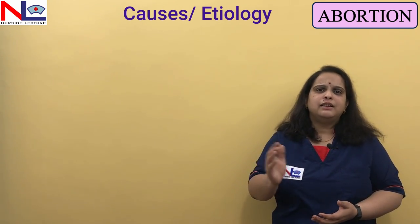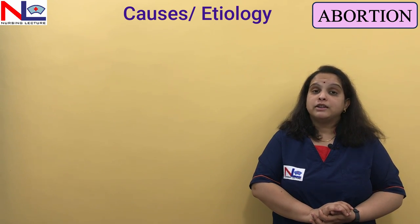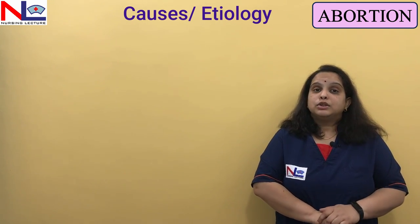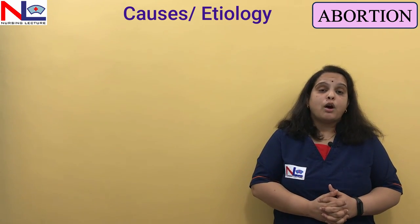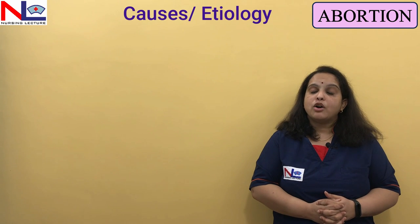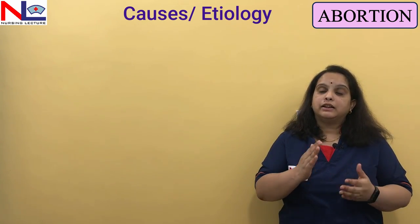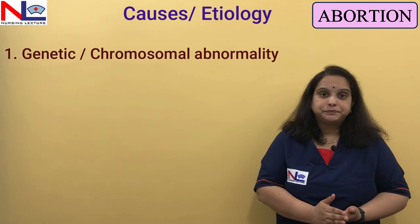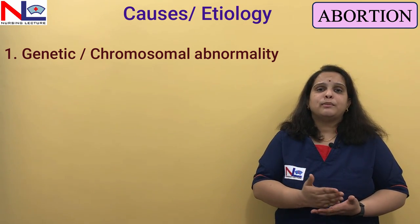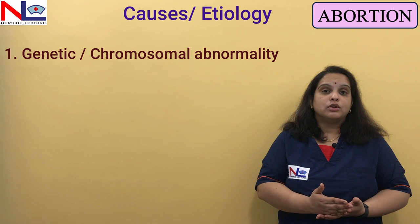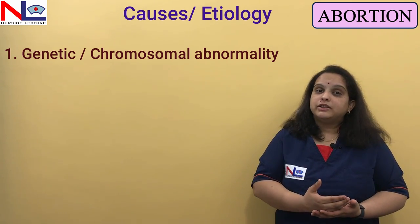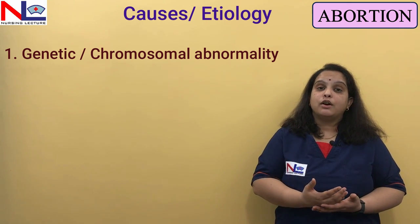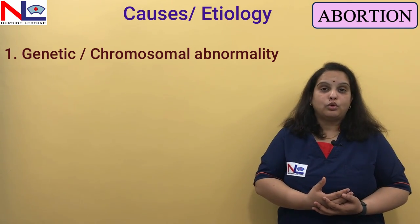We'll look at the general causes which can lead to first and second trimester abortion. The most common cause in spontaneous abortion is chromosomal abnormality — the genetic factor. Chromosomal abnormalities can be because of a change in the number of chromosomes or because of a structural defect in the chromosome.